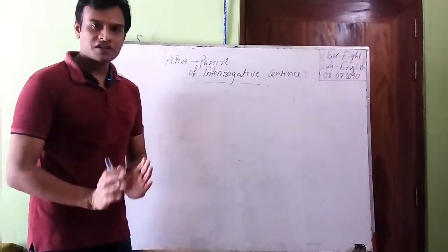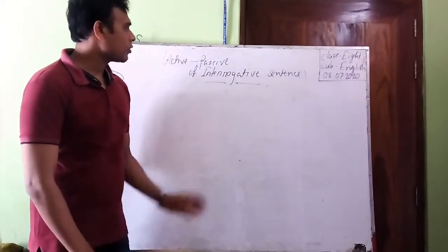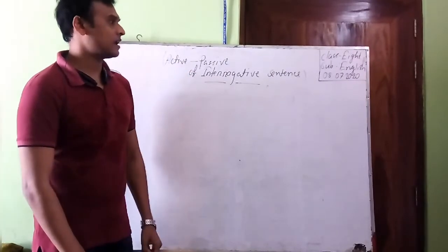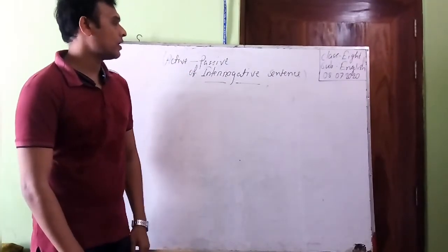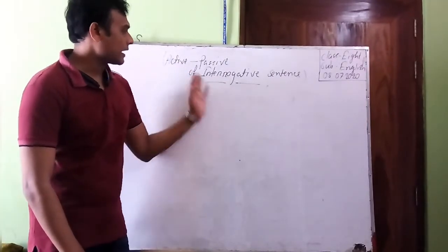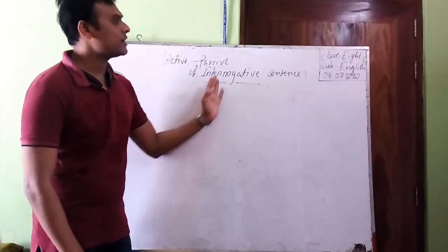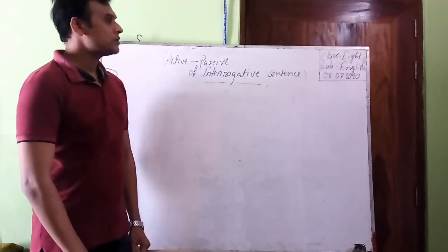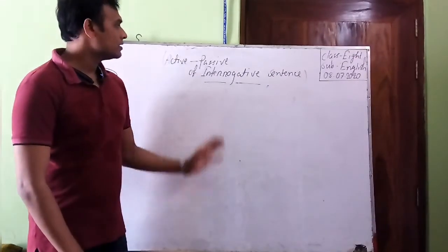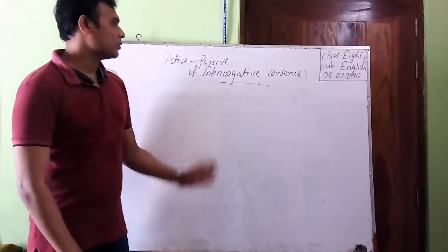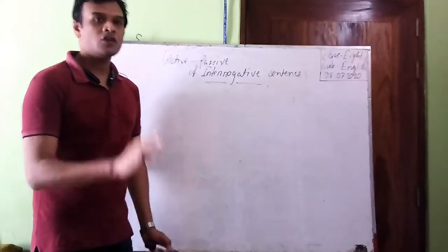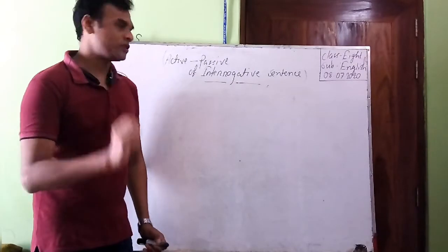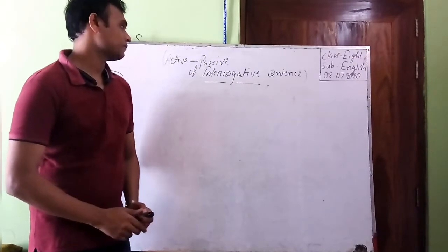In our last class we learnt about active to passive of assertive sentences, and now we will be learning about active to passive of interrogative sentences. In this segment we will have four rules in total.